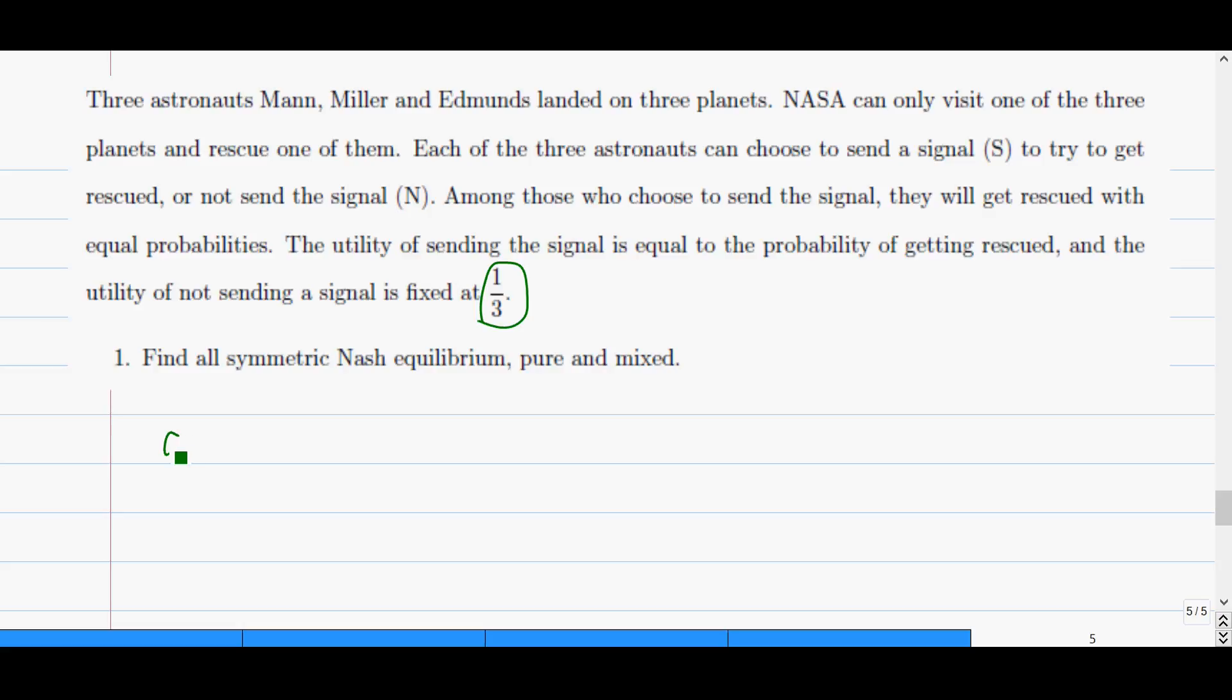The idea is always the same. The first step is always make assumptions of the other players' mixing probabilities. Since it's symmetric, they use the same mixing probabilities. So the probability of players both 2 and 3 playing S will be equal to alpha. And the probability of both of them playing N will be 1 minus alpha.